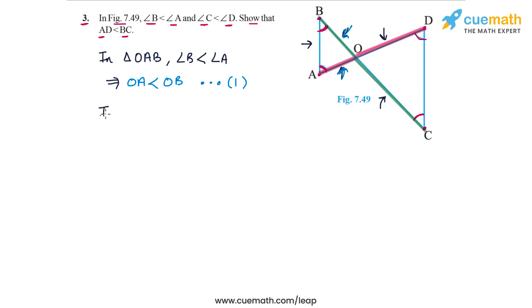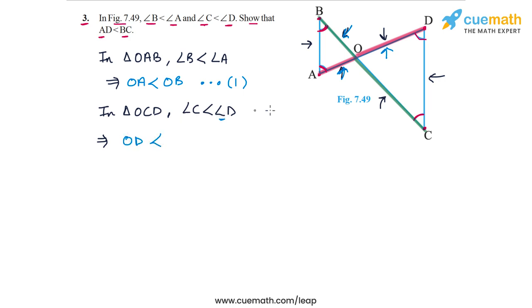Similarly, in triangle OCD — the triangle on the right — we are given that angle C is less than angle D. Therefore the side opposite angle C, which is OD, must be less than the side opposite angle D, which is OC. So OD is less than OC. Let's call this Inequality 2.